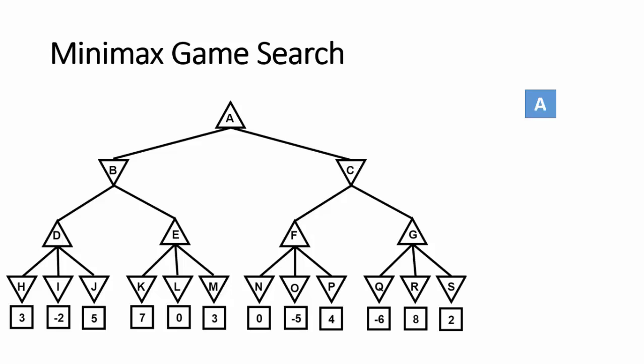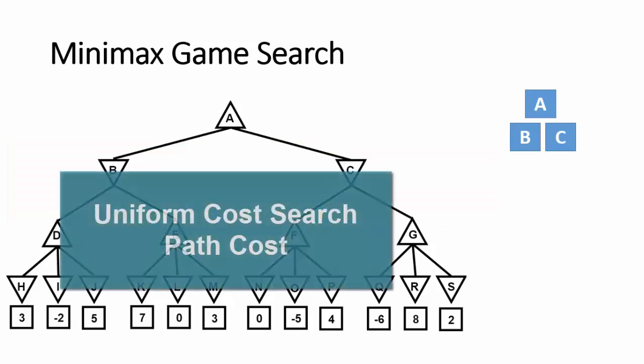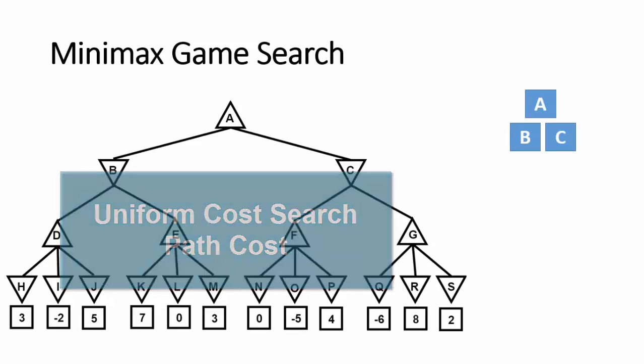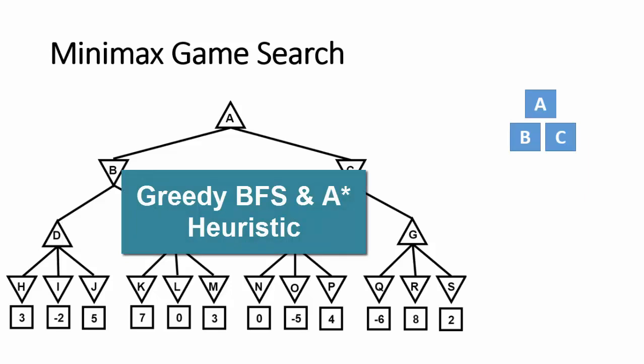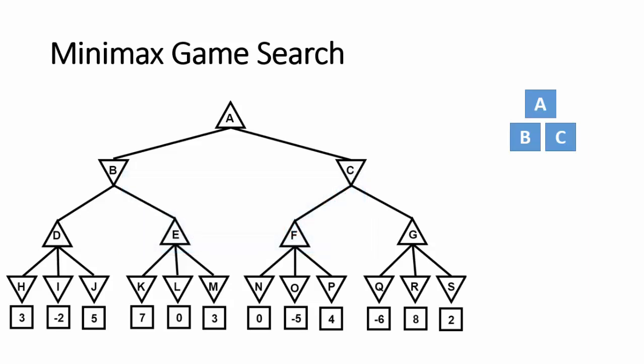As with regular search strategies in artificial intelligence — either uninformed or informed — Minimax game search starts by exploring the root node. Node A is explored because it is not a goal node; we want to find a branch to follow. There are different metrics used by different search strategies to select the best child, like cost or heuristic. Minimax game search is an example of informed search — it uses heuristic values to select the best child to follow.